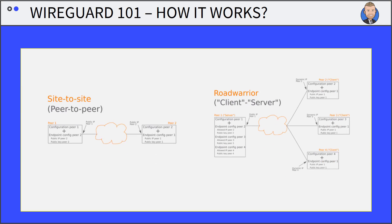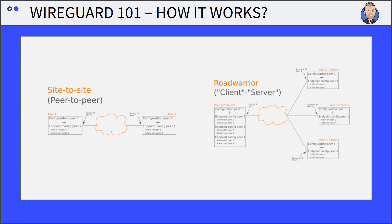WireGuard 101 — how it works. WireGuard uses UDP to transmit the encrypted IP packets. Ports can be freely selected from a high port range. If no port is selected, WireGuard starts at 51820 UDP.